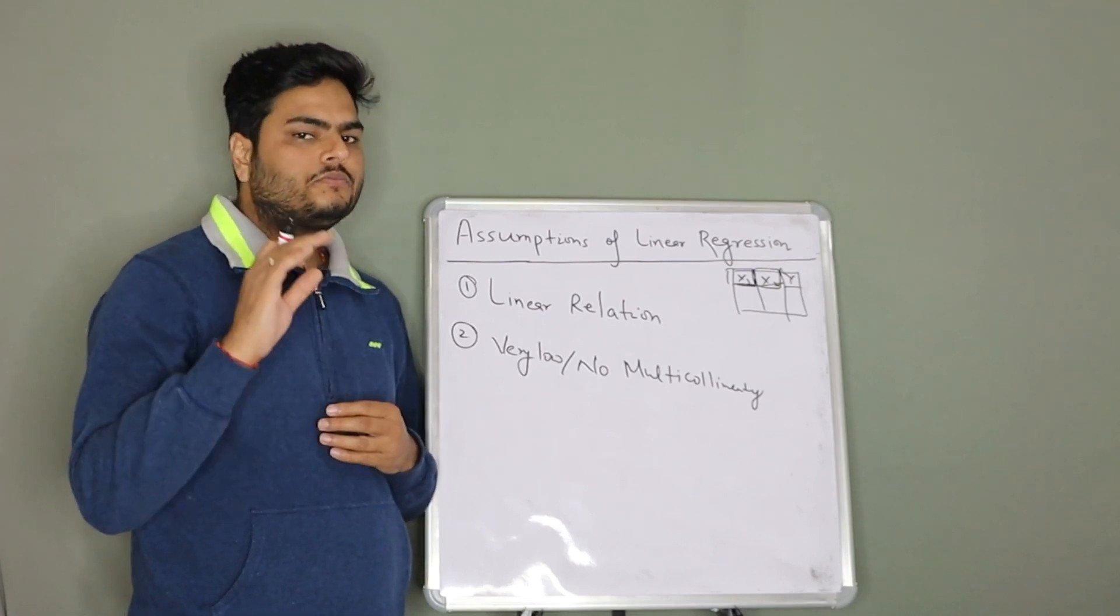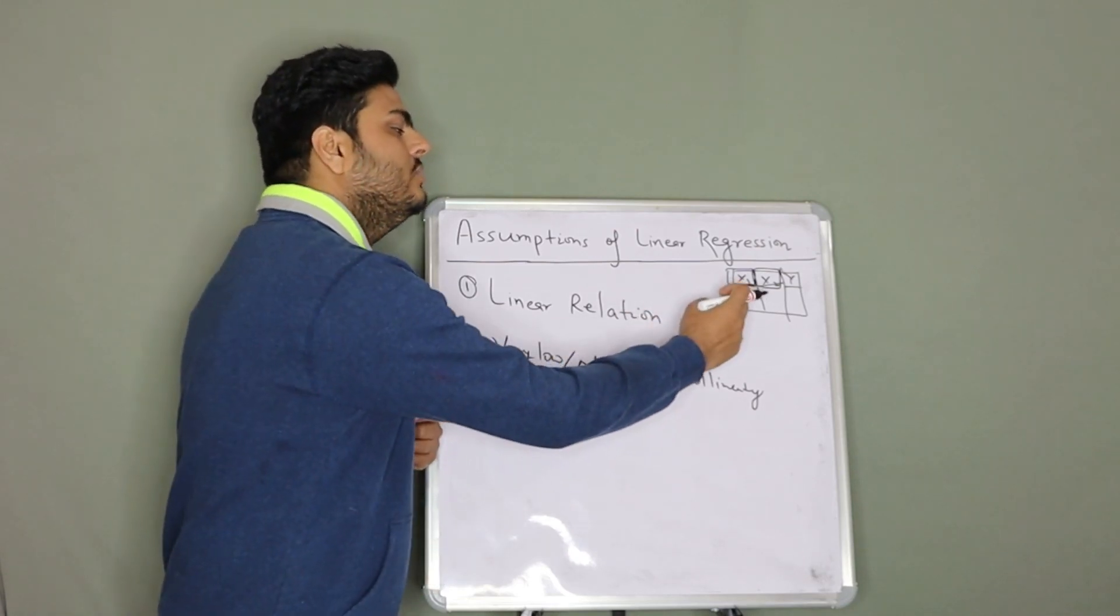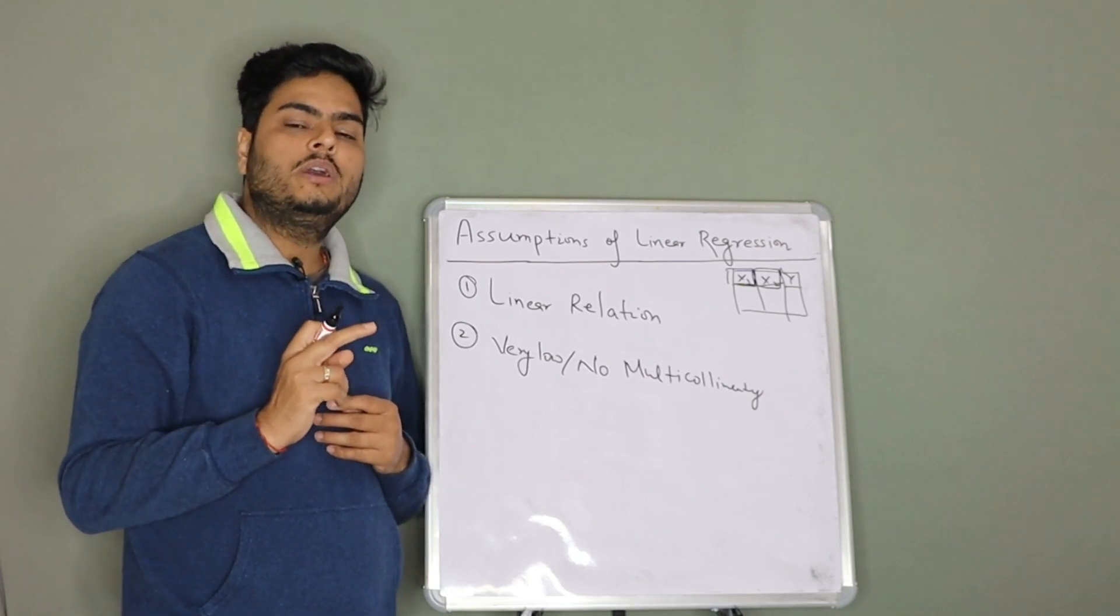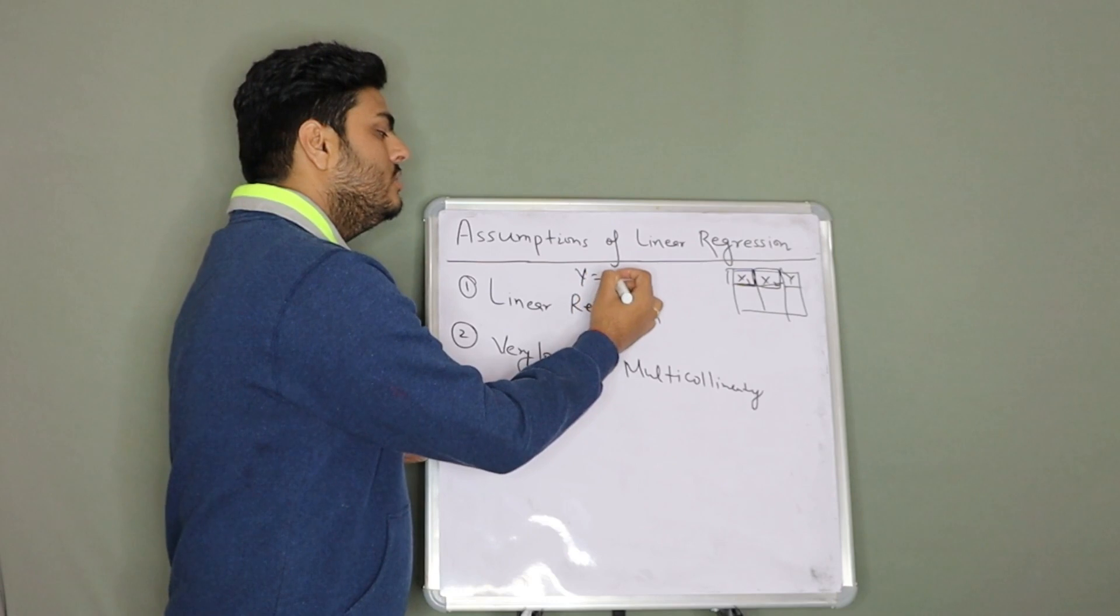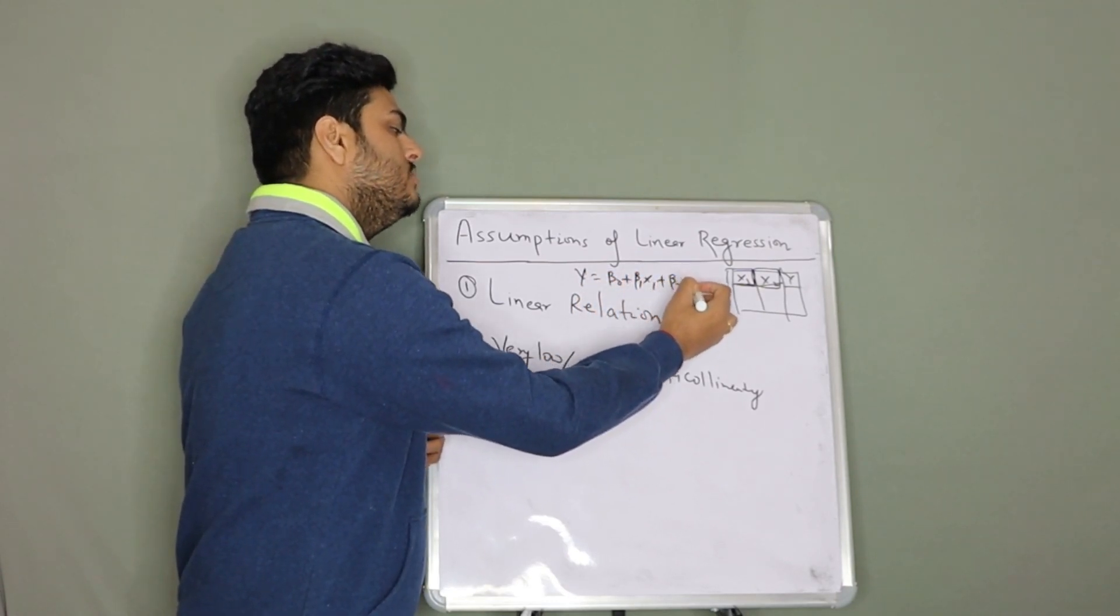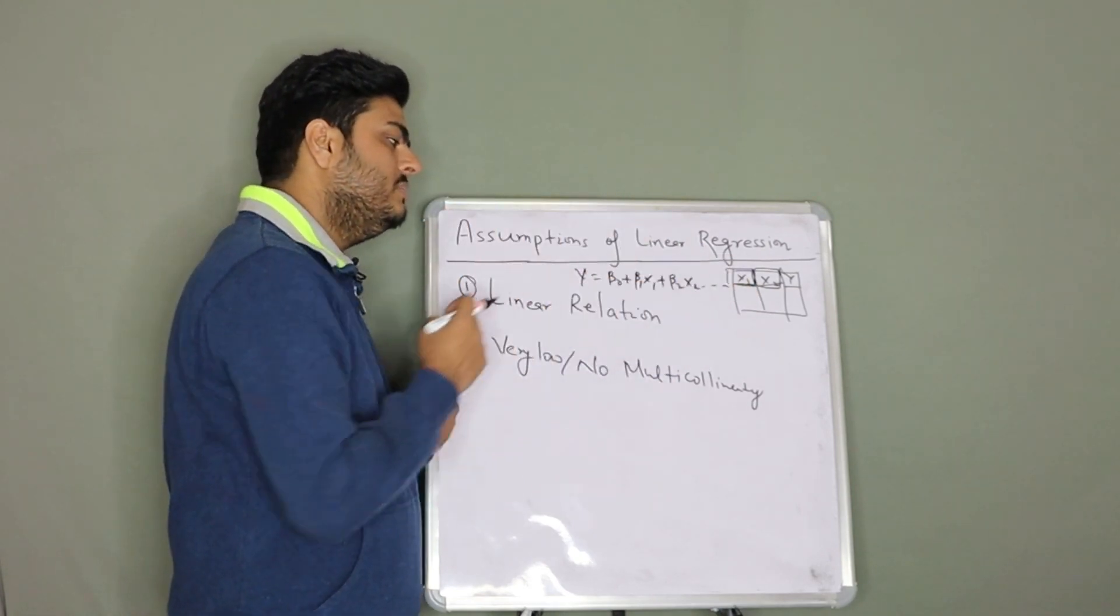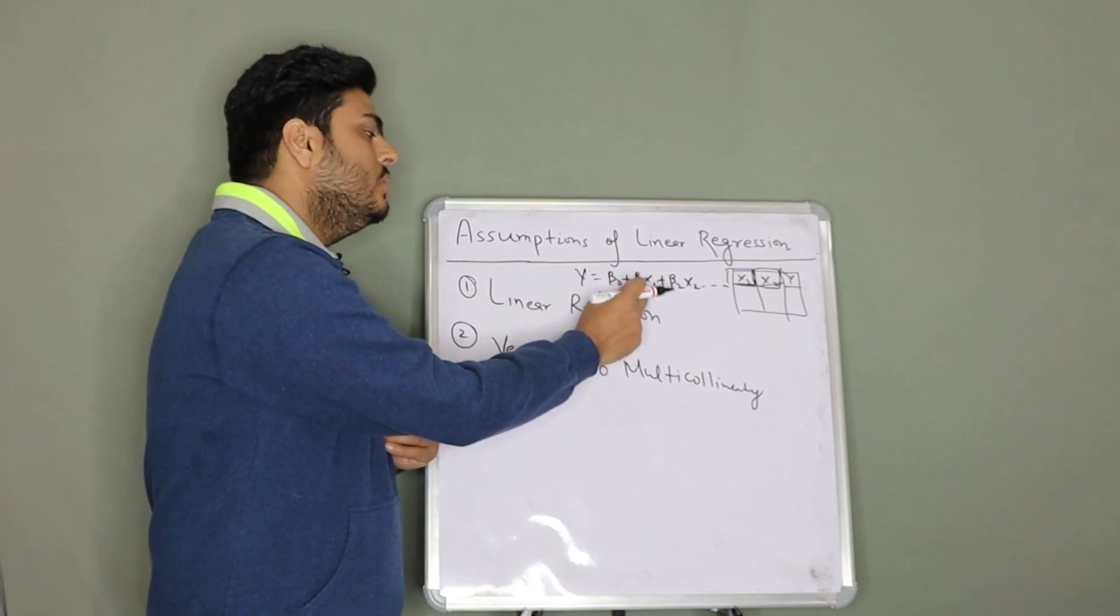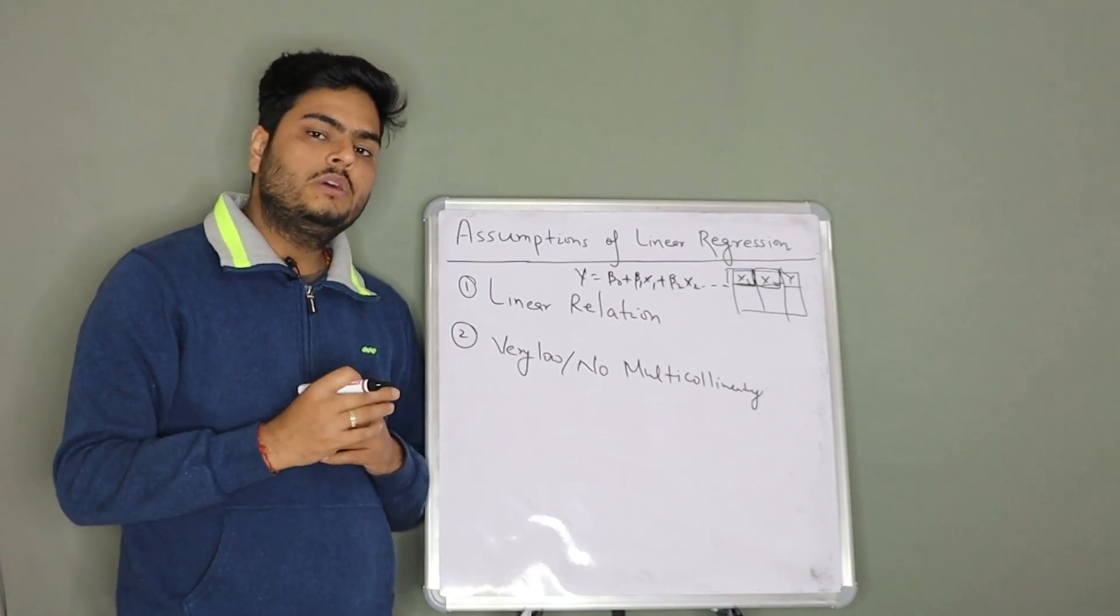The problem is because the way we want to measure the relation between x1 and y is we want to keep x2 constant. You say y is equal to beta naught plus beta 1 x1 plus beta 2 x2 and so on. How do you define beta 0, beta 1, beta 2? You say for every unit shift in x1, what is the relative shift in y keeping all other variables constant.